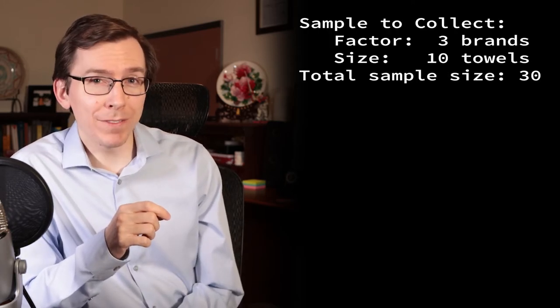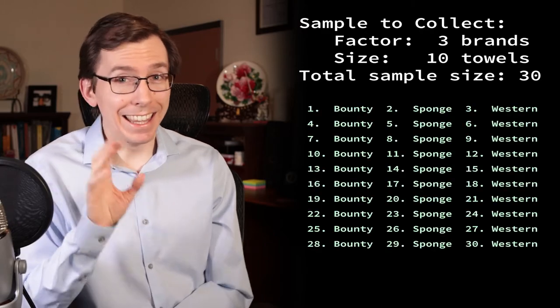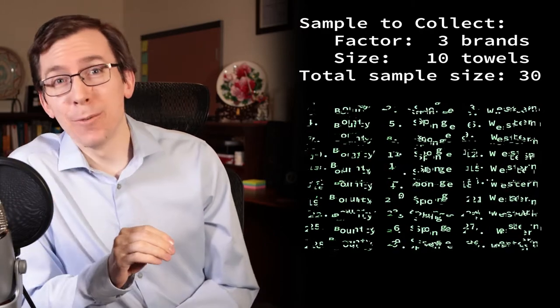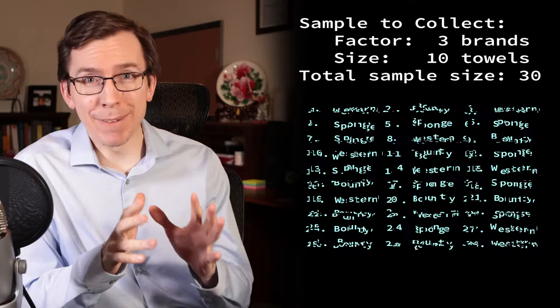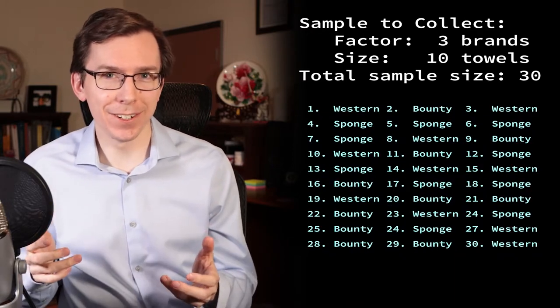In this example, I measured the weight of these paper towels after being submerged in a bowl of water. Ten towels from each of the three brands were tested, and the order of testing was randomized. And this is a key point: when performing an experiment, randomize everything you can to avoid potential confounders.